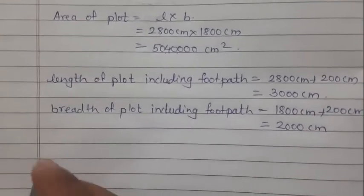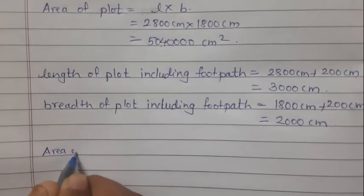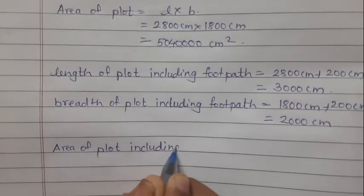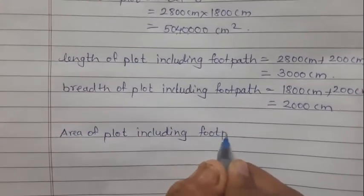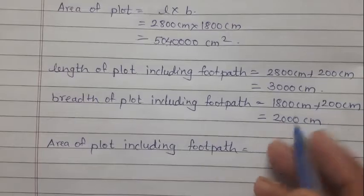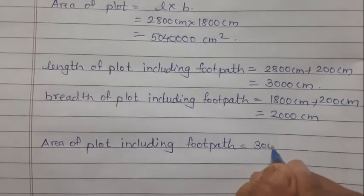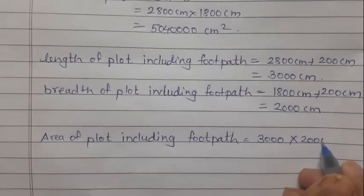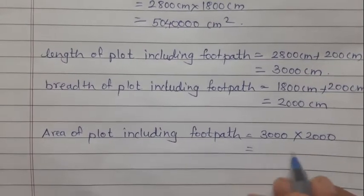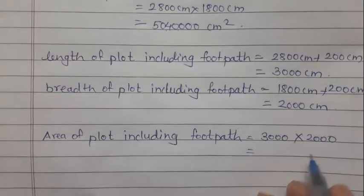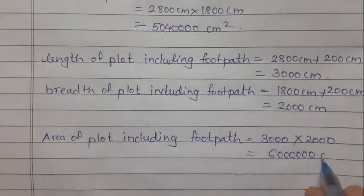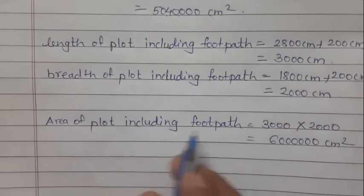Area of plot including footpath: length is 3000 cm and breadth is 2000 cm. 3 times 2 is 6, with six zeros total, so area of plot including footpath equals 60,00,000 cm².